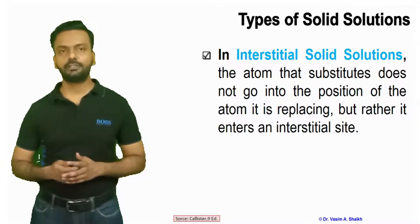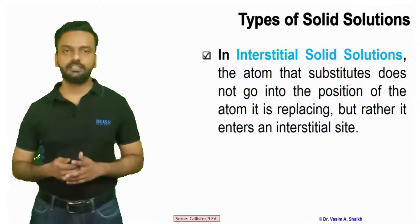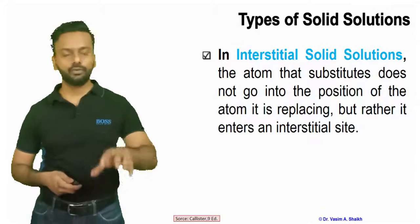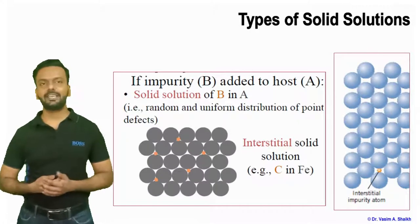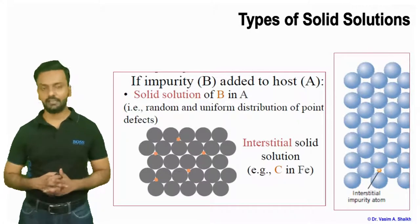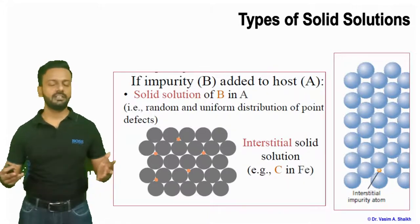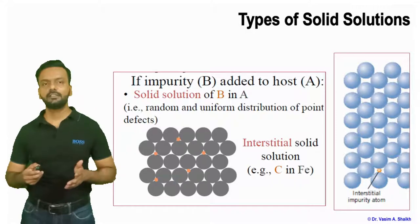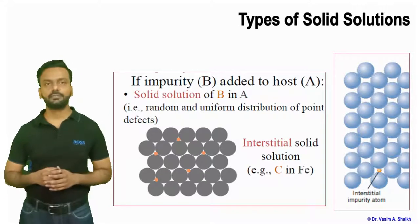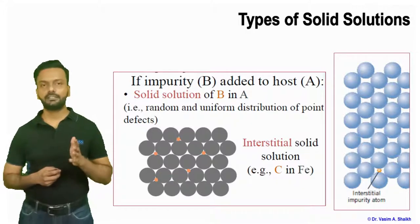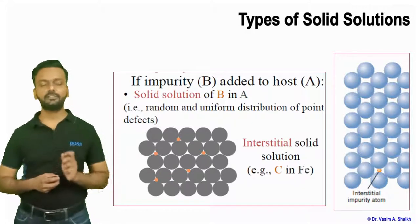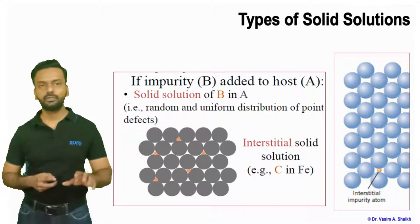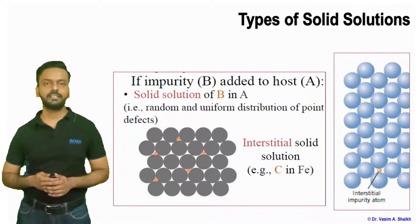Now let us move on to interstitial solid solutions. There are many interstitial sites present in a crystal structure, and the foreign atom goes into these interstitial sites. A classic example is carbon in iron — steel is formed when carbon goes into an interstitial site in iron. The foreign atom either substitutes or fills the gaps in the host atom's crystal structure.